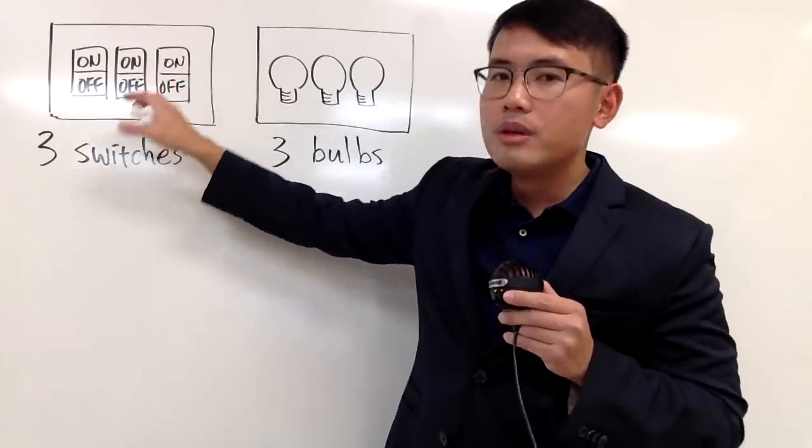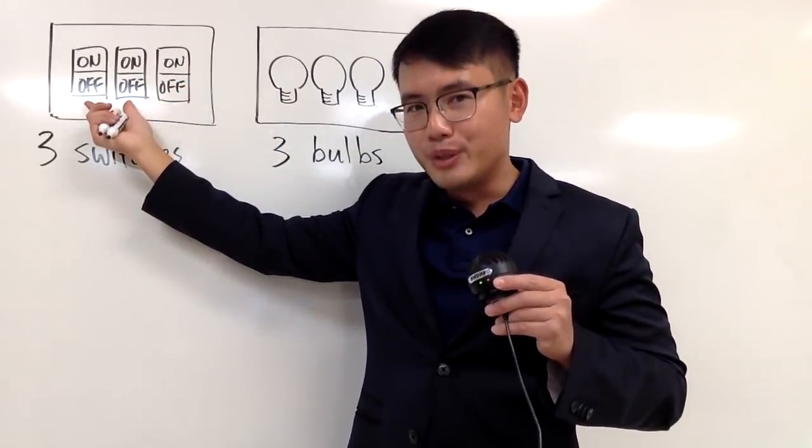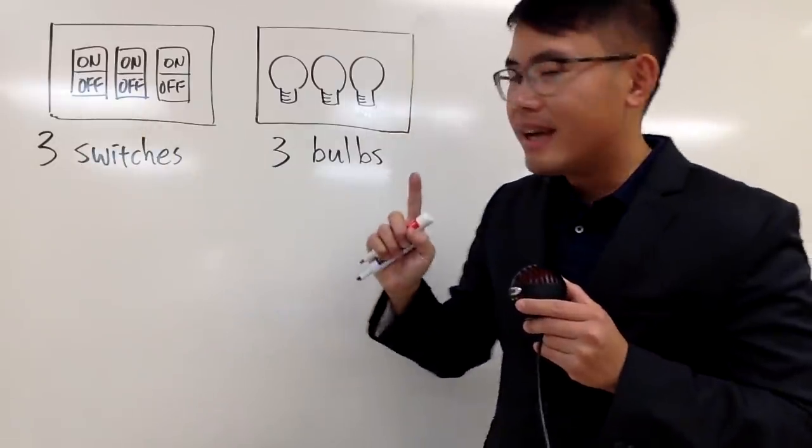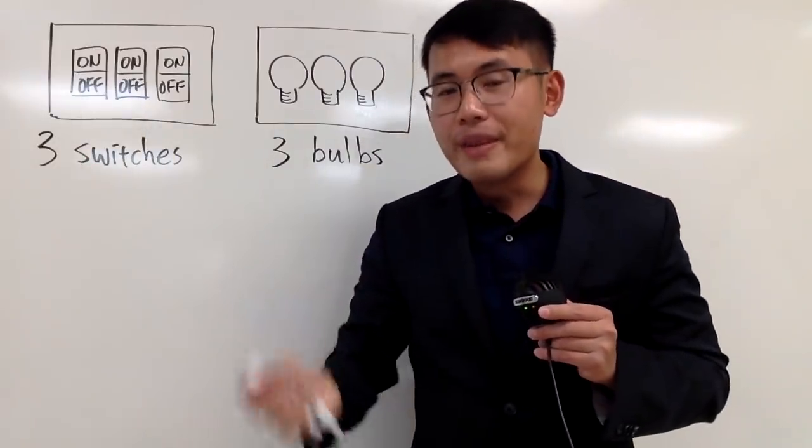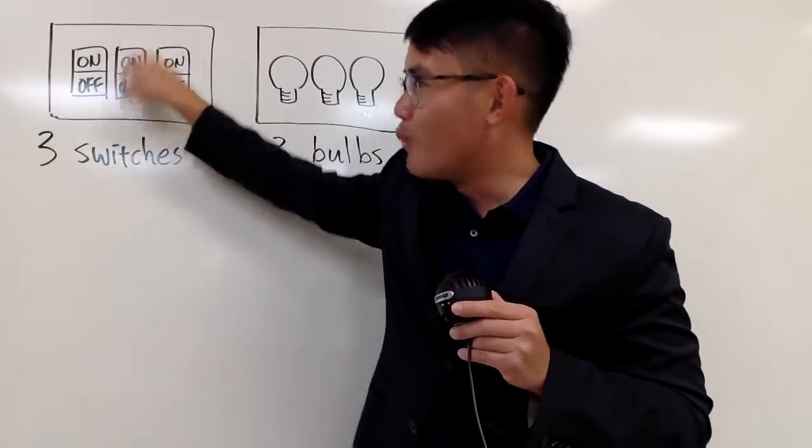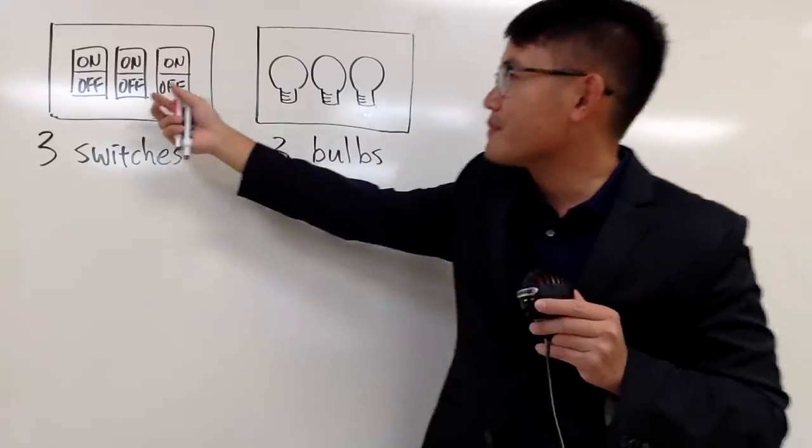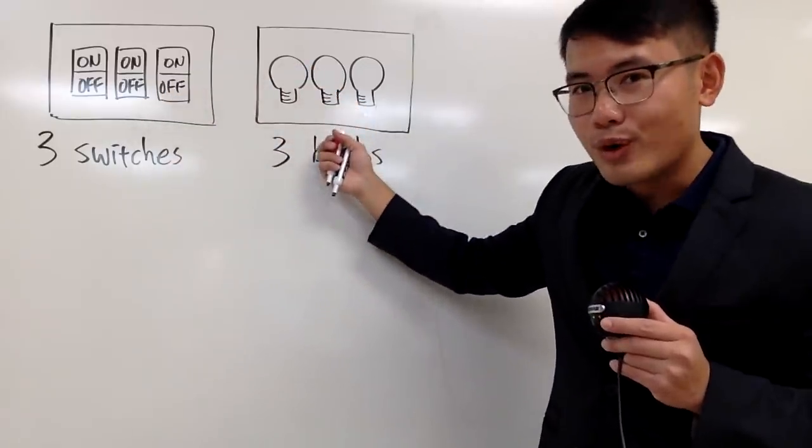You walk into the first room. Turn on any two switches, and then stay in the room, wait for a while, and then turn off one of them. Because when you turn off the light bulb, then you can walk into the other room.